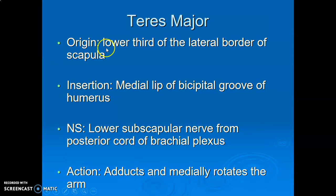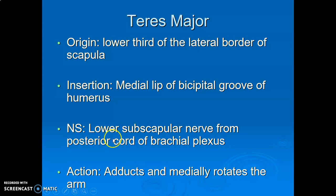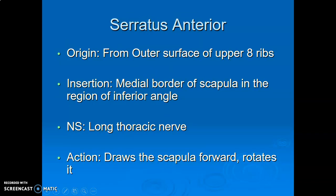Teres major comes from the lower third of the lateral border of the scapula and inserts on the medial lip of the bicipital groove. It is innervated by the lower subscapular nerve from the posterior cord — subscapularis has both upper and lower subscapular, but teres major has only the lower subscapular nerve. Its actions are adduction and medial rotation of the arm.